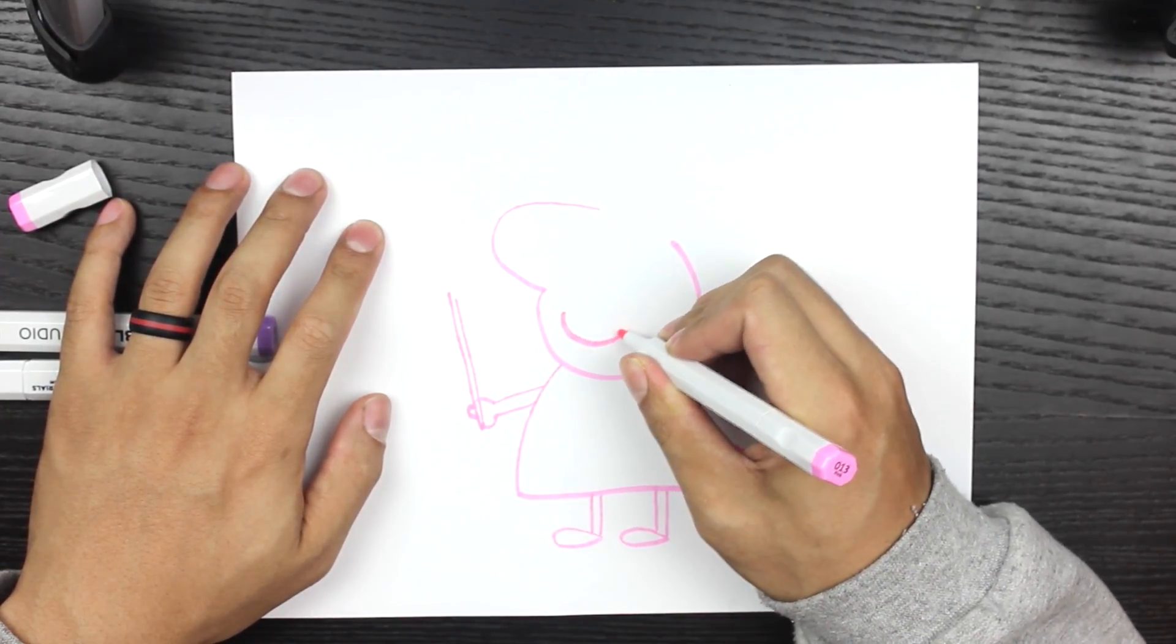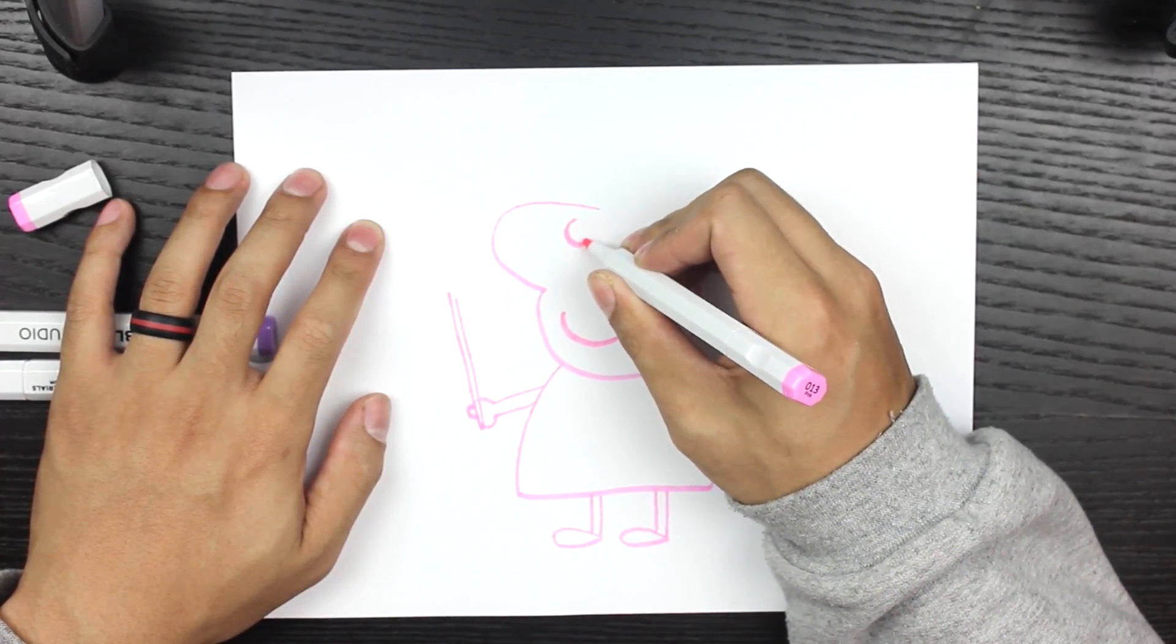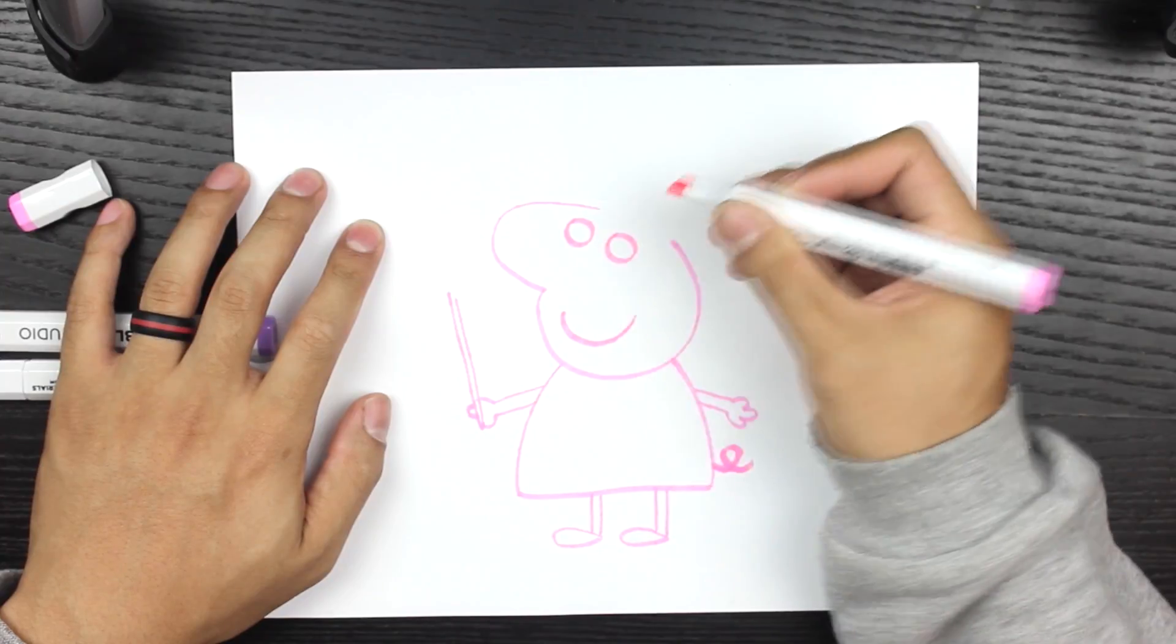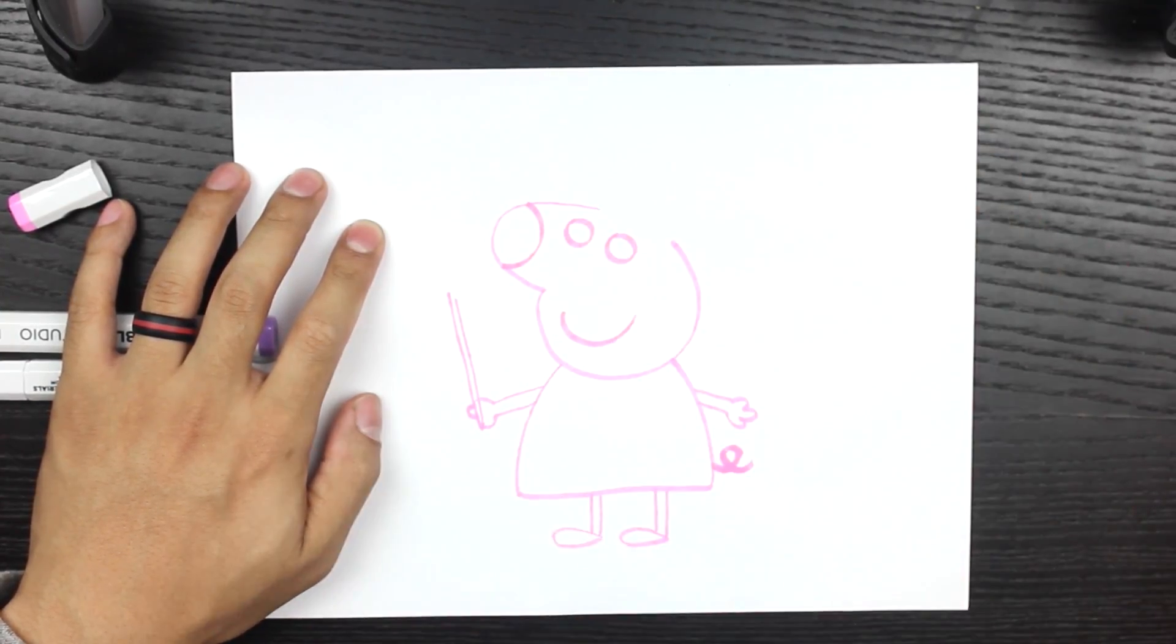So now we're going to start off with a big smile. Followed by the outlines of the eyes - one here and one right there. They're kind of at a diagonal angle, followed by the nose.